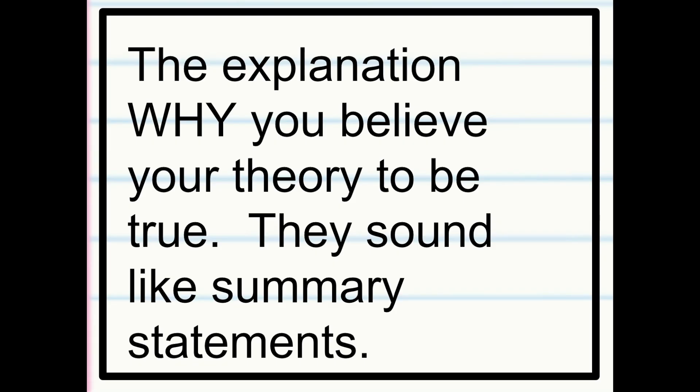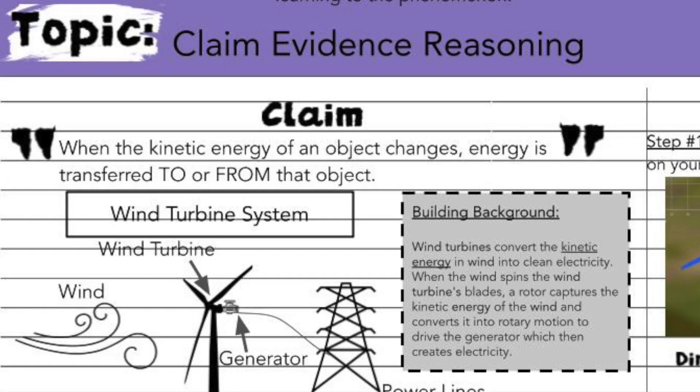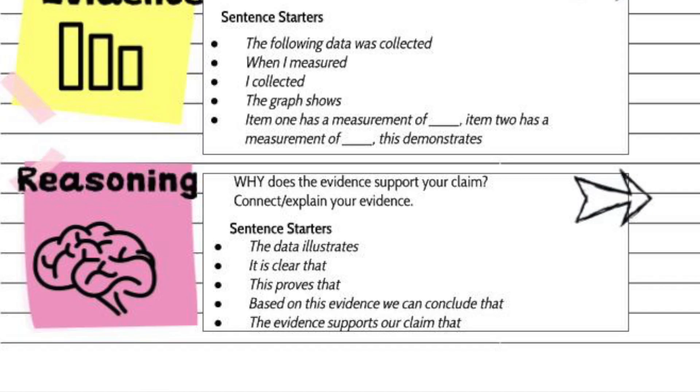The last thing we're adding to our CER report is the reasoning. Reasoning is the explanation of why you believe your theory to be true. They sound like summary statements. So we're going to report how our evidence from our investigation shows us that when the kinetic energy of an object changes, it transfers energy to another object. Use these sentence starters to help you write your reasoning.